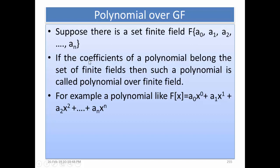If the coefficients of a polynomial belong to the set of a finite field, then such a polynomial is called a polynomial over finite field. Here you can see this polynomial: a0·x^0 plus a1·x^1 plus a2·x^2 up to an·x^n, where the coefficients are the elements of the finite field.